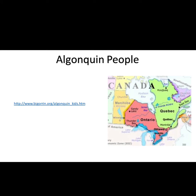So the Algonquin people actually live in the Canadian area and Canada is just north of the United States. They live in Ontario and Quebec, as you see on our map. And that's where the story that we're listening to today came from. In the link that you see right there, I'll show you just in a second the website that you can look at and learn a little bit about those people if you're interested.